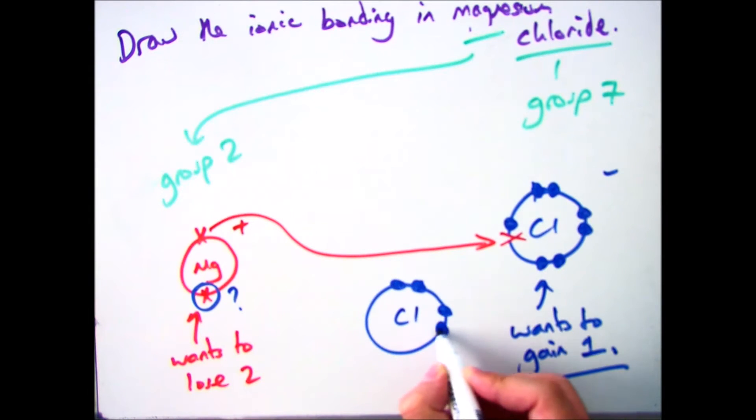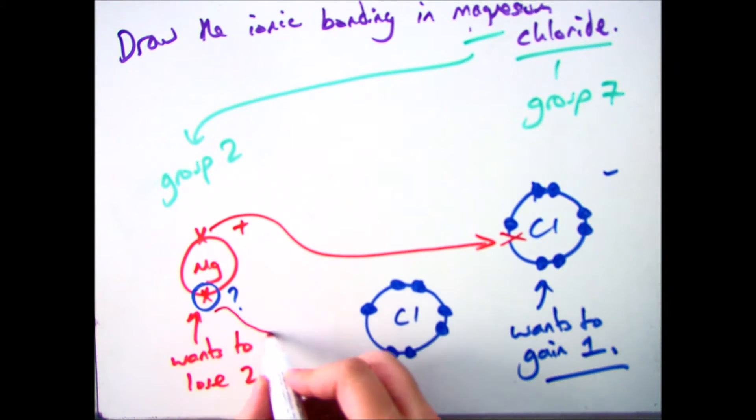The solution is we add in another chlorine atom. So the same process then occurs. We've got one electron on the magnesium now that is transferred over to the chlorine. That chlorine then gets a full outer shell and becomes negatively charged, and our magnesium becomes Mg2+ overall.